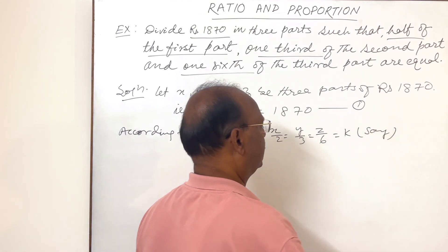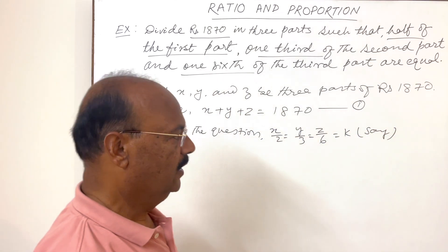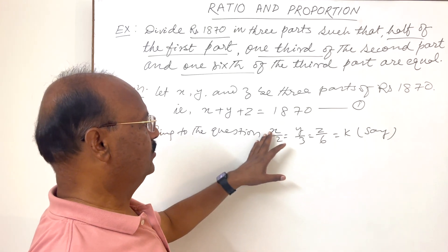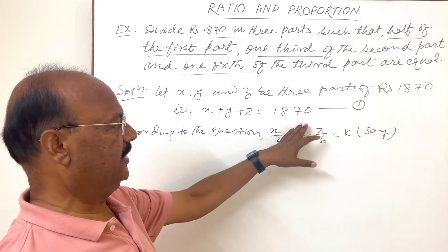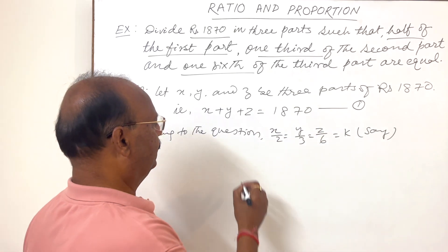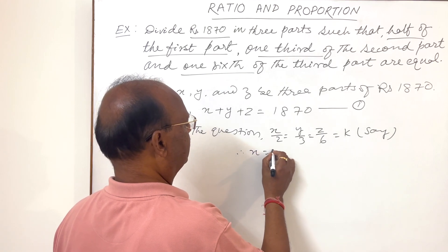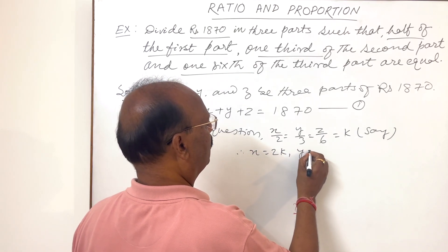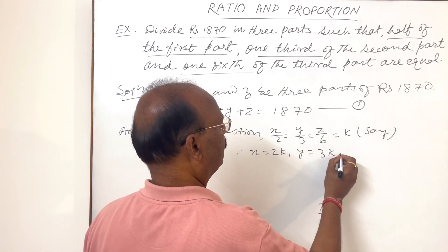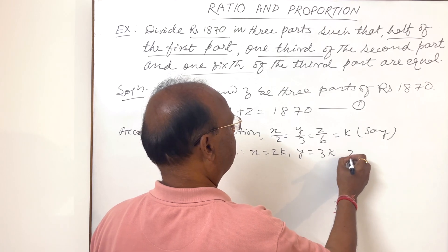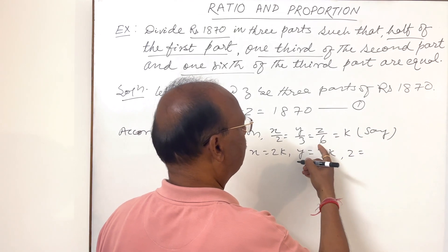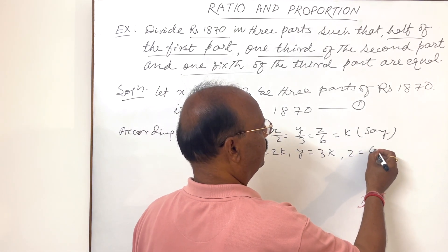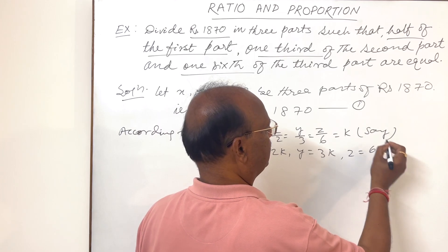Let us suppose x by 2 equals y by 3 equals z by 6, and this common value is equal to k. In terms of k, by cross multiplication, we can write: x is equal to 2k, y is equal to 3k, and z is equal to 6k.